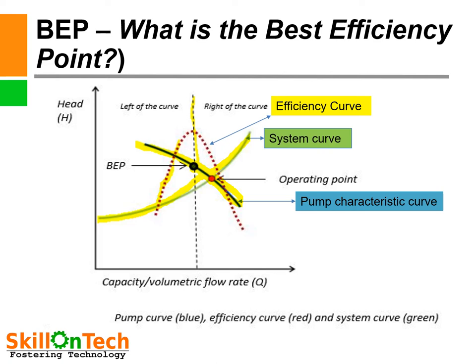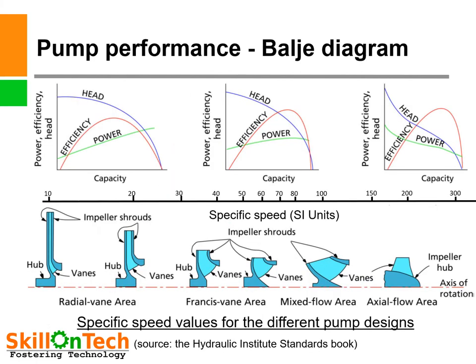The efficiency at the operating point can be found by drawing a perpendicular line from that point to the efficiency curve. So the pump's actual operating efficiency may differ from the best efficiency point, and this is the operating point of the pump.